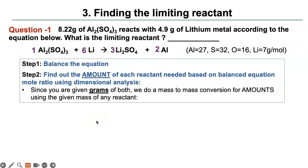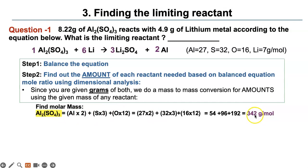Step 2, you're going to find the amount of each reactant needed based on the balanced equation mole ratio. You can use any of the two reactants here. We will just go with aluminum sulfate. You can do lithium if you want. But in the end, you will find out who the limiting reactant is, the same answer. So here is the molar mass calculation for aluminum sulfate. And it ends up being 342 grams per mole if I round the numbers to a whole number.